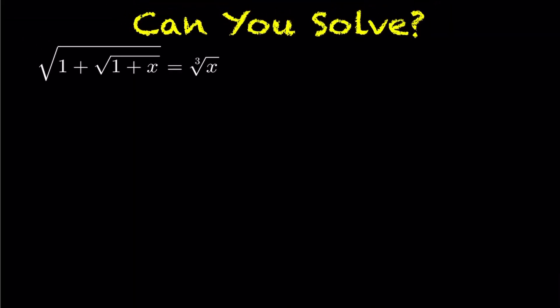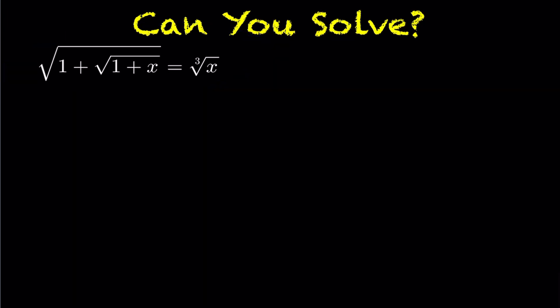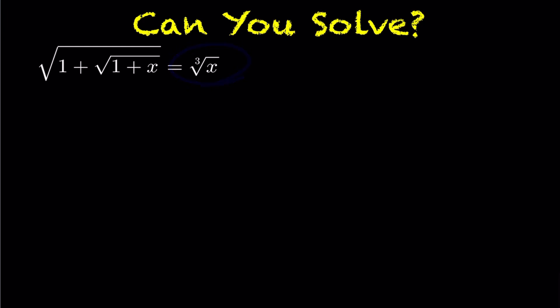In the following question we want to solve a radical equation from a math olympiad and solve for x. You'll notice this is to the power of a half and this is to the power of a third.